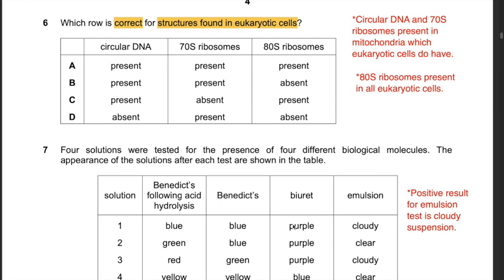Question 6: Which row is correct for structures found in eukaryotic cells? 80S ribosomes are definitely present in all eukaryotic cells, so the answer is either A or C. Circular DNA and 70S ribosomes, although found in prokaryotic cells, are also found in eukaryotic cells — in mitochondria and chloroplasts. Hence the answer is A: circular DNA, 70S ribosomes, and 80S ribosomes are all present in eukaryotic cells.